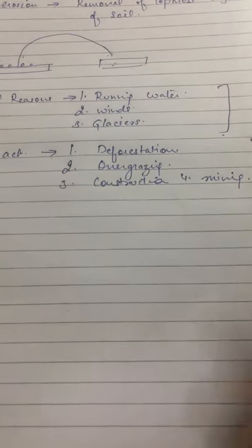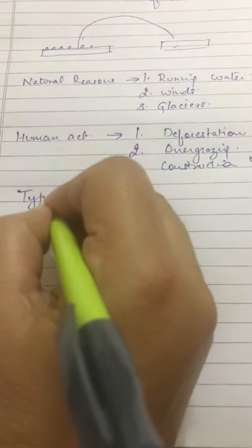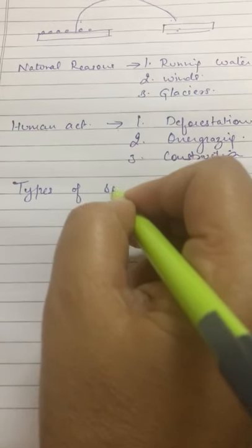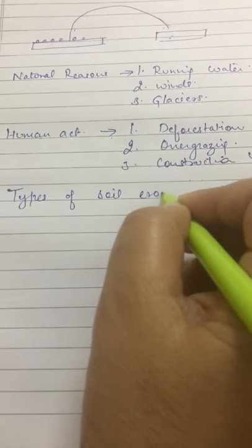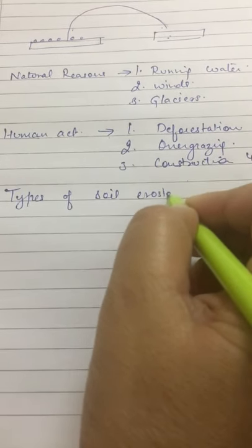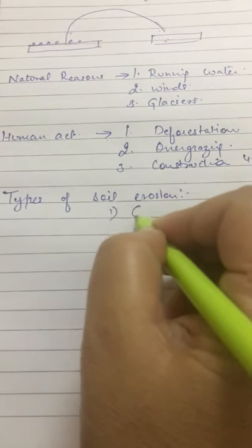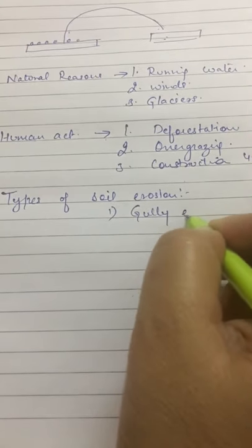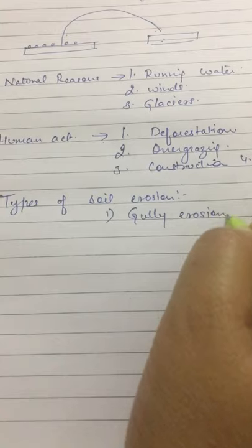Now we discuss the types of soil erosion. There are two types: number one is gully erosion and number two is sheet erosion.